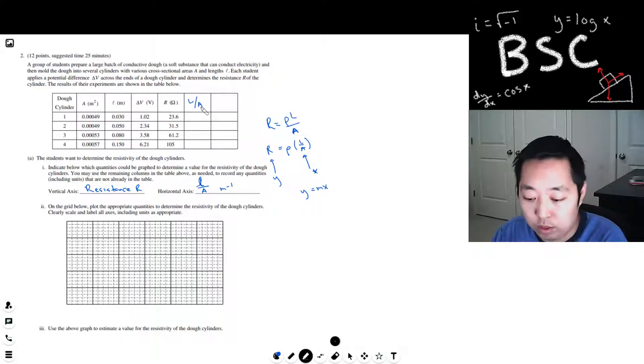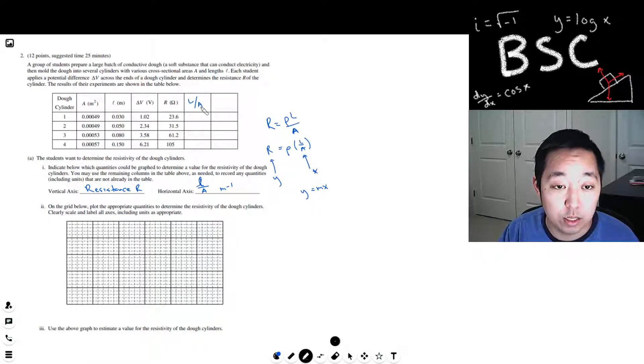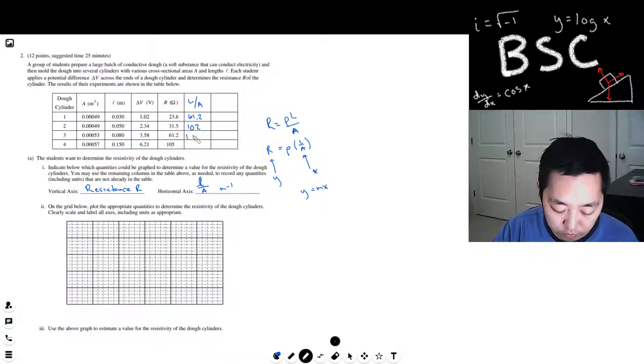So I need to record L over A here, and here's where I'm going to use my trusty calculator to compute what L over A is for each of these. 0.0049 divided by 0.030 divided by 0.012349, 161.2, probably don't need to be that accurate. I'm going to get 5 but leave the area the same, I get 102. Then when I do 0.08 divided by 0.00053 I get 151, and then 0.150 divided by 0.00057, 263.